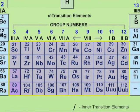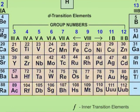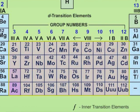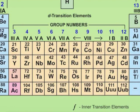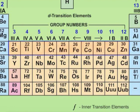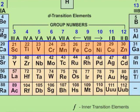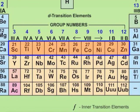Manganese is present in the D block, first transition series of the periodic table. In this episode, we will discuss the oxides of D block elements. When metals of the first transition series are heated in the presence of oxygen, oxides are formed. In these oxides, the oxidation number varies from plus 1 to plus 7.